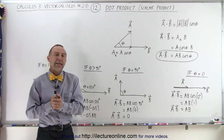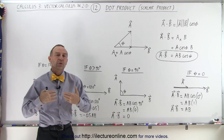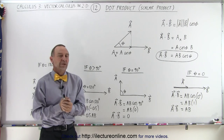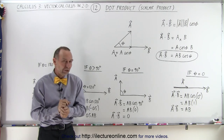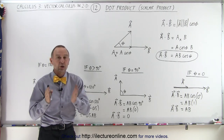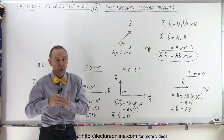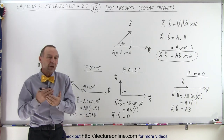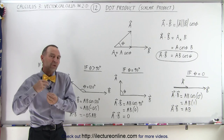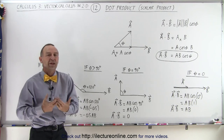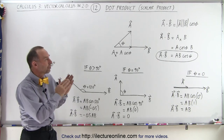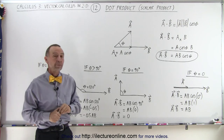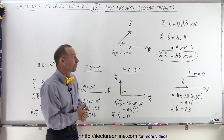Welcome to iLectroOnline. Here we're going to attack the concept of multiplying two vectors together. When we multiply two vectors together we can either do that using what we call a dot product, also known as the scalar product, or the cross product. The cross product we'll have to wait for another series of videos — in the next set we'll attack the cross product — but here we'll talk about the dot product or the scalar product.